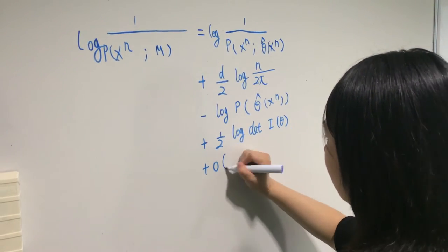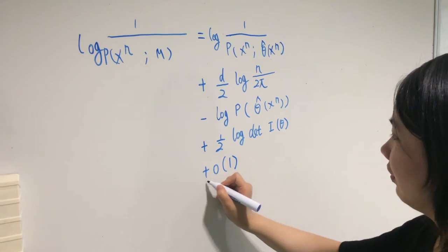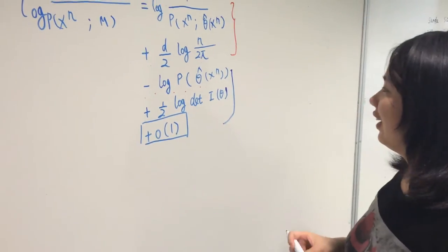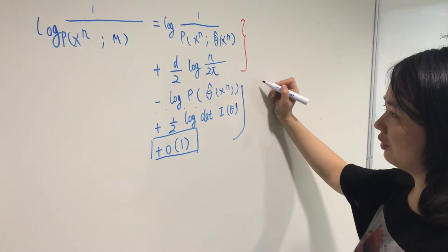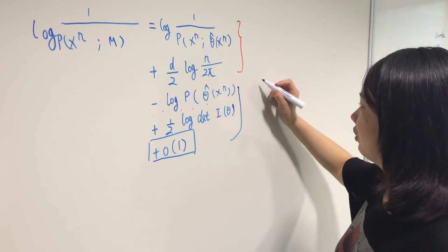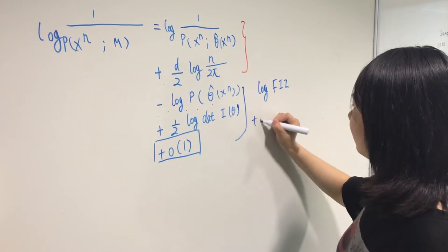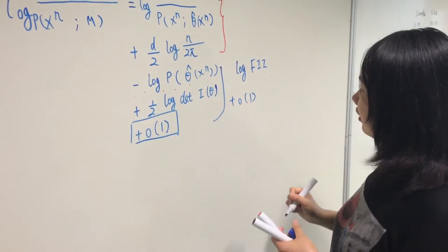A small o(1) term that will grow to 0 as the sample size increases. When we use Jeffery's prior, the last three terms become log fii plus small o(1).